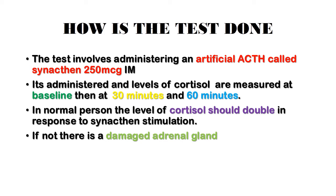The short synactin test involves administering the artificial ACTH, known as synactin, in an amount of 250 micrograms intramuscularly. After administration, you measure the levels of cortisol at baseline — that is, at the time of administration — then after 30 minutes, then at 60 minutes. So you have a range of one hour to carry out these tests.